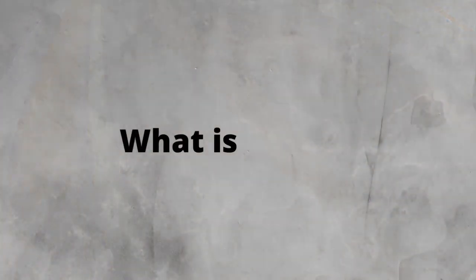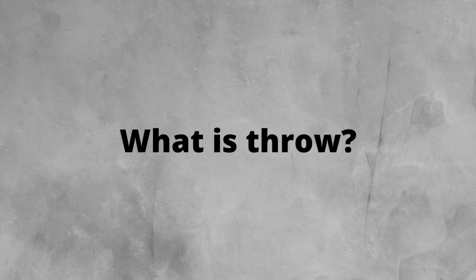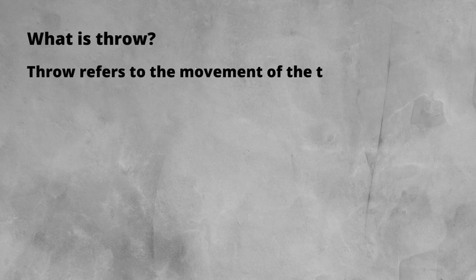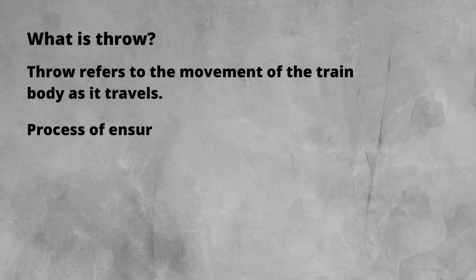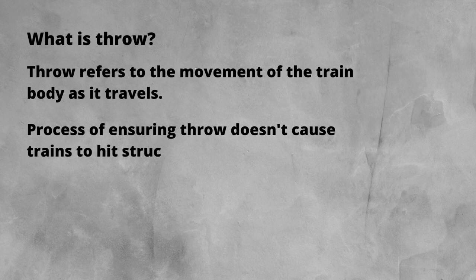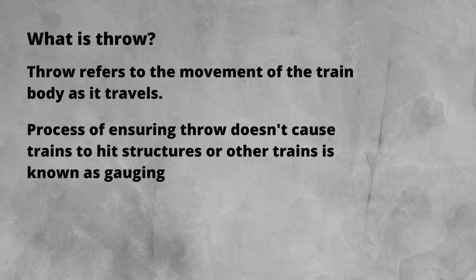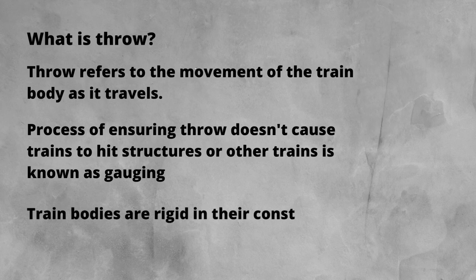Before we get to the difference between end and centre throw, what do we actually mean by throw? The term throw refers to the lateral movement or displacement of the train body as it travels along the track. This movement is caused by the train's natural swaying and bending, particularly when navigating curves in the track. The process of ensuring the train does not collide with structures or other trains that it passes is known as gauging. It's important to note here that train car bodies, like buses and coaches, are designed as long, rigid structures with no ability to bend in the middle.